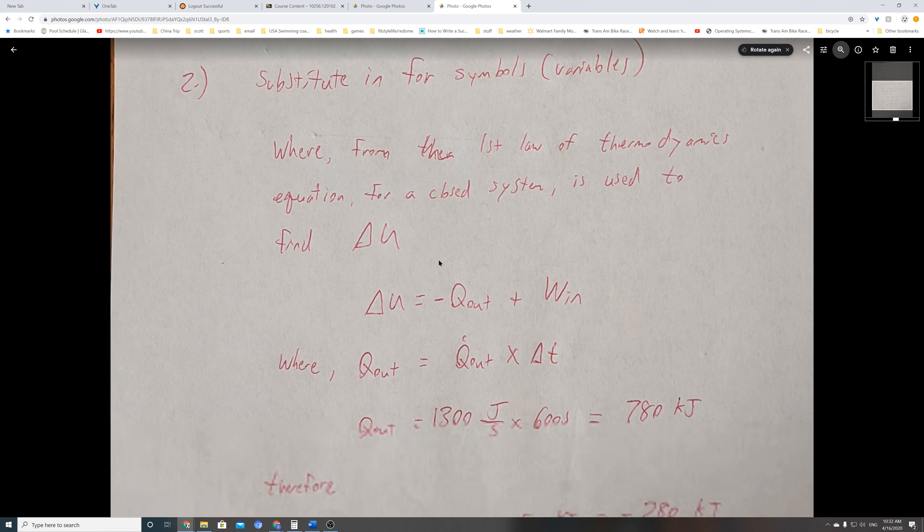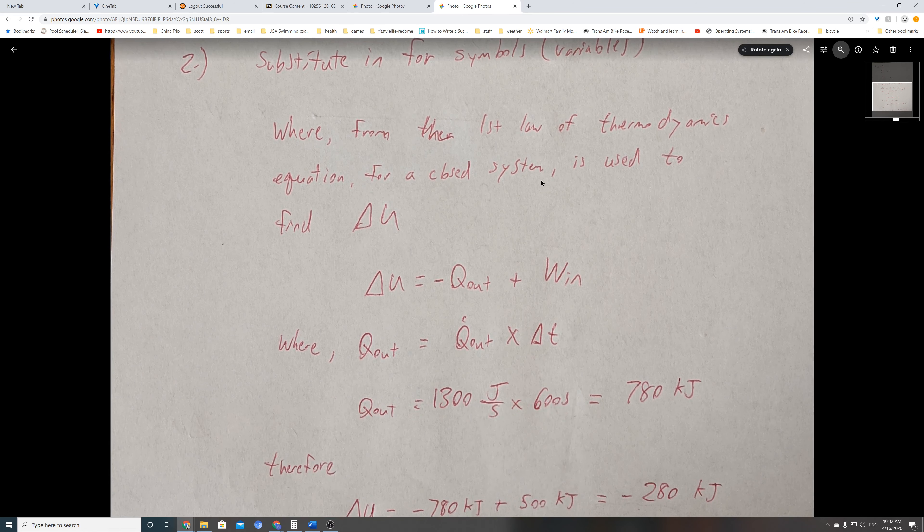Delta U for a closed system: there's no heat coming in and no work being done out from the system. All we have is our heat that's leaving plus whatever work is being brought in. To determine the heat that's leaving, it's the rate times the time.